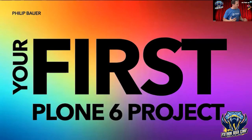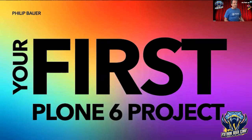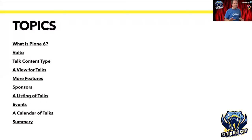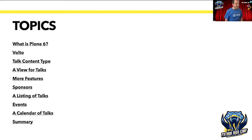I'm going to talk about Plone 6 and your first Plone 6 project. I'll kick off with some information about what Plone is, what Plone 6 is, and Volto if you've ever heard of that. I'm going to create a content type, create a view for that, talk about a couple of features we'd use for this first project. We'll add sponsors because it's a conference website, add listings, move stuff to events and show them in a calendar.